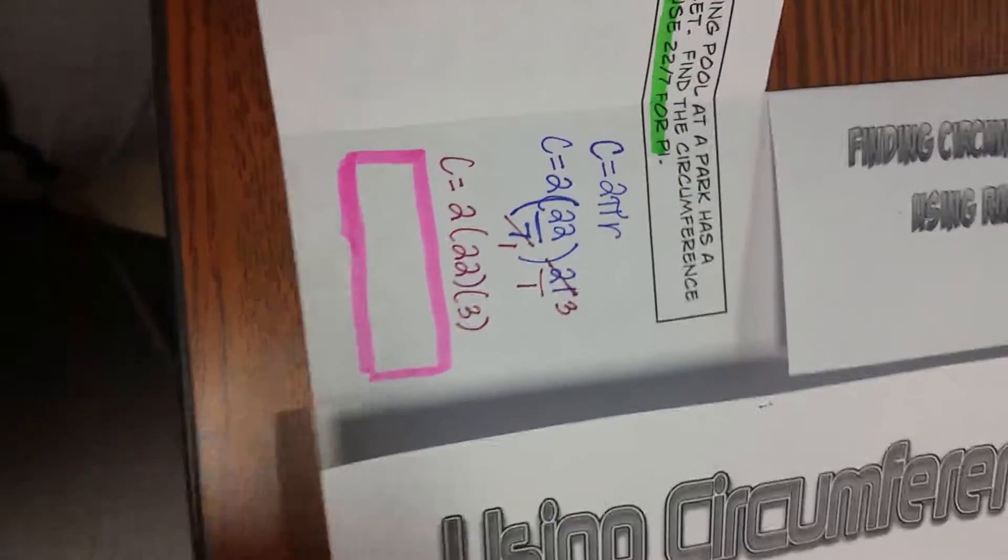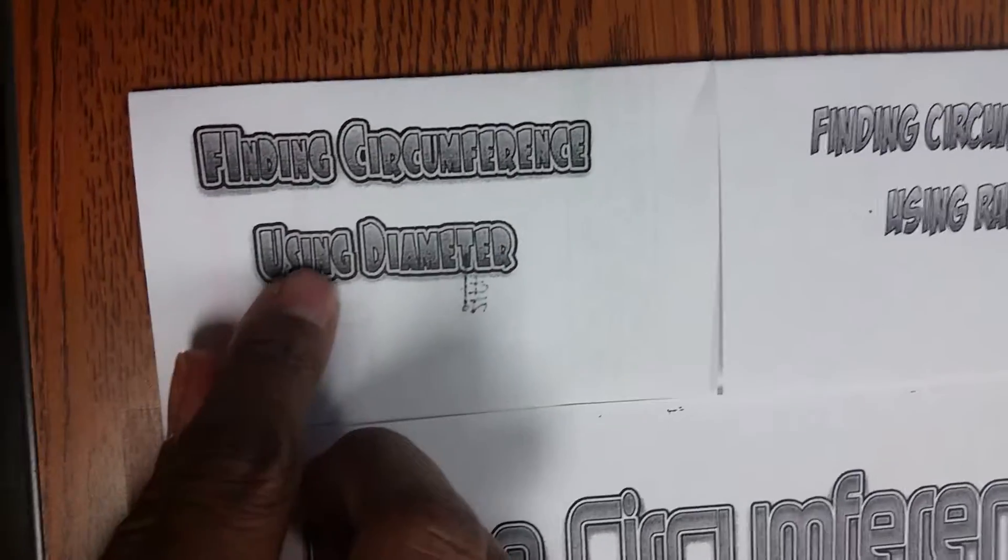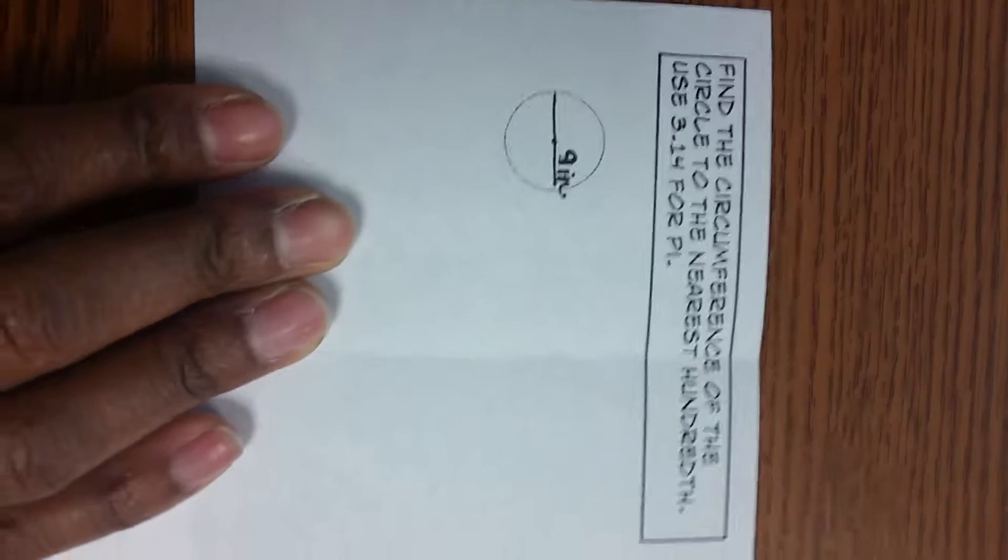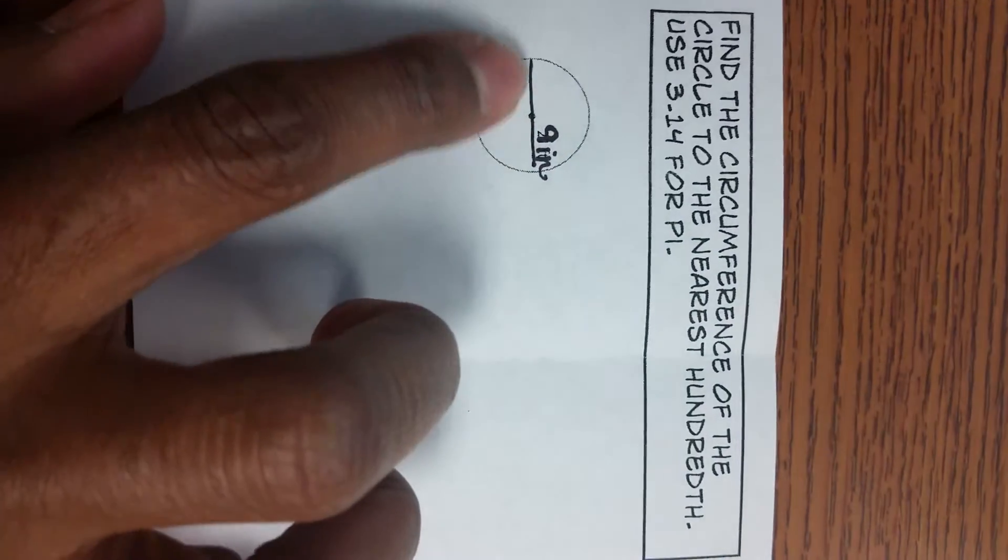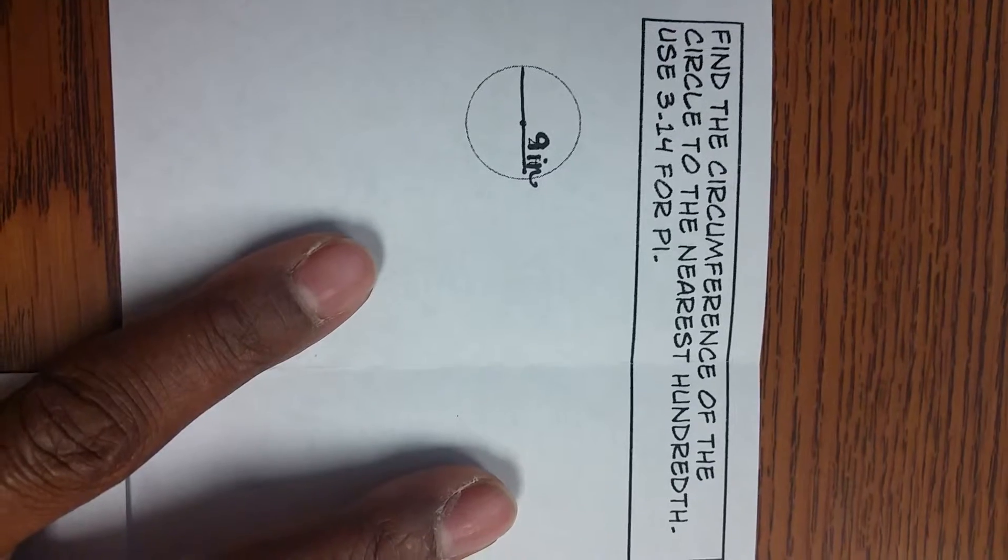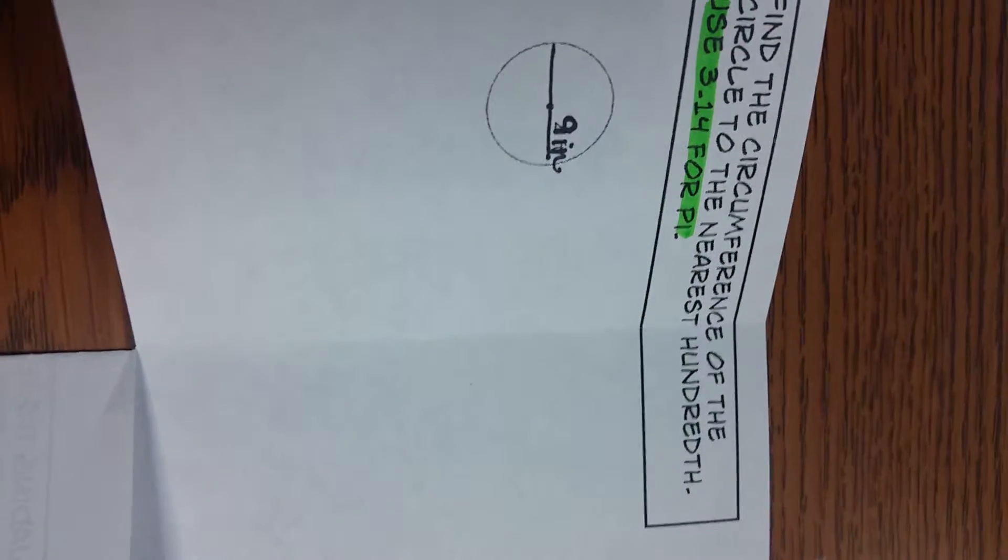Alright, now we're going to move up to finding circumference using diameter, but again, I made that mistake and it's here under the radius flap. So I relabeled my circle here. I changed that 21 to 9 inches and put the diameter all the way across. Now we're going to find the circumference of this circle to the nearest hundredth and we're going to use 3.14 for pi this time.